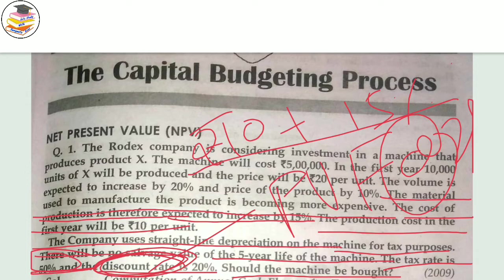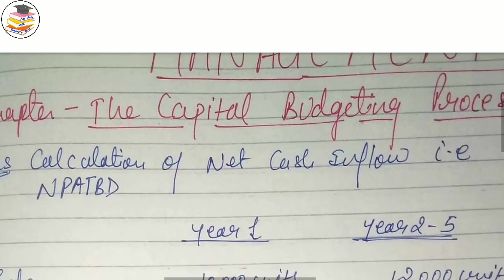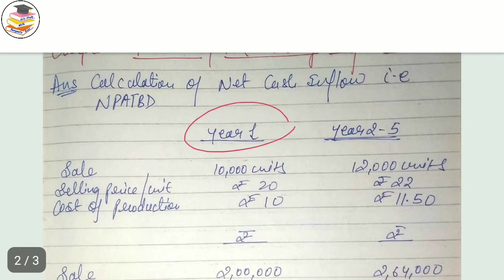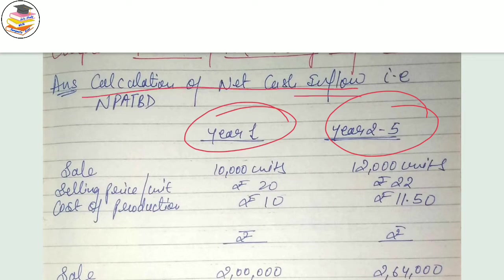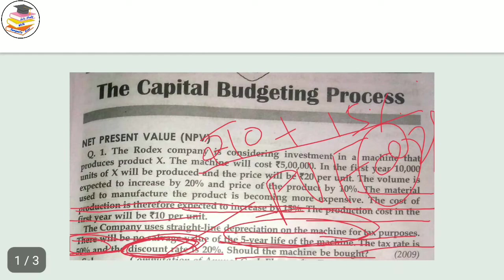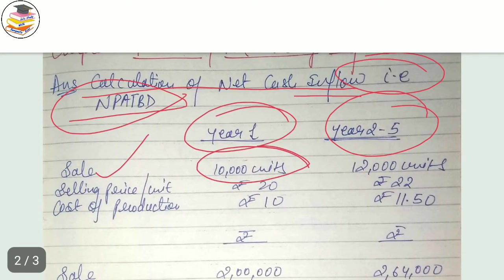Now understand the calculation approach. The machine's life is 5 years, so calculations run from year 1 to year 5. The first year information is separate, and years 2 to 5 are separate. We are going to calculate the net cash flow — that is net profit after tax but before depreciation, which is the cash inflow. Sales units for the first year are 10,000 units; from the second to fifth year, sales increase by 20 percent — so 10,000 plus 20 percent equals 12,000 units.